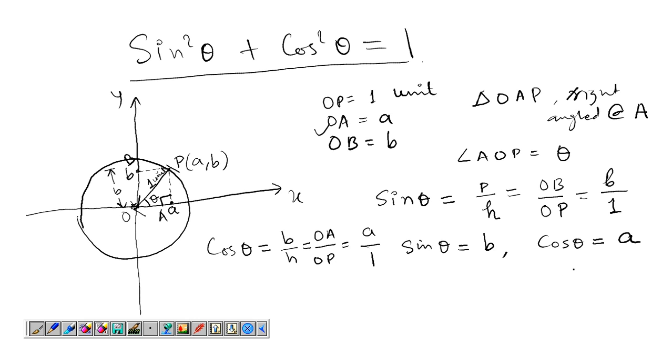So we get cosθ is equal to a. Now from left hand side sin²θ plus cos²θ is equal to b² plus a².